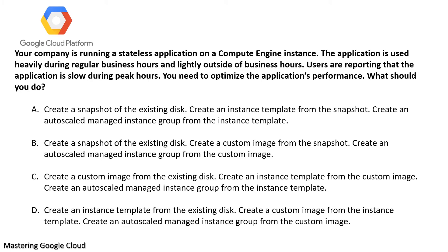Option B then says create an auto-scale managed instance group from the custom image. But the auto-scale managed instance group is created from a template, not directly from the image. So option B is also ruled out. Option C says create an image from the existing disk and create an instance template from that image.